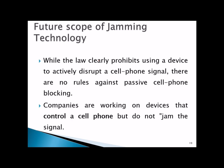Regarding the future scope of jamming technology — while the law clearly prohibits using a device to actively disrupt a cell phone signal, there are no rules against passive cell phone blocking. In military and high-threat areas, governments can grant permission. Companies are also working on devices that control a cell phone without jamming the signal.